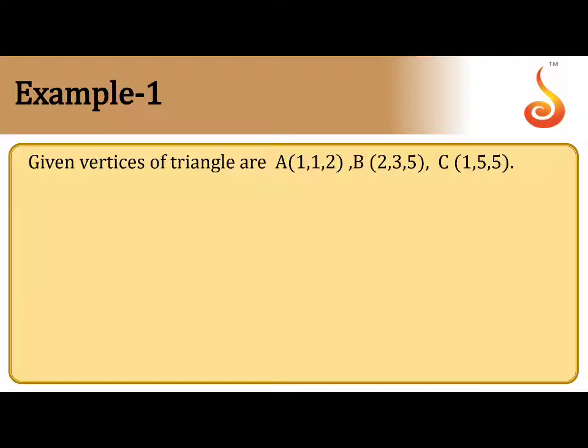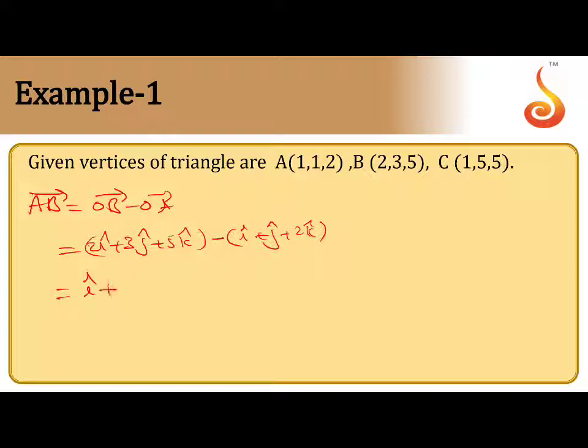Okay, let us take first AB vector. AB vector means OB minus OA. What is OB? 2i plus 3j plus 5k minus OA vector i plus j plus 2k. So, now this gives 2i minus i, 3j minus j, 2j and 5k minus 2k that is 3k. So, you got it here. This is AB vector.